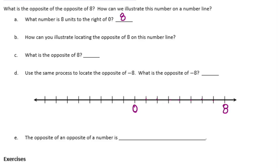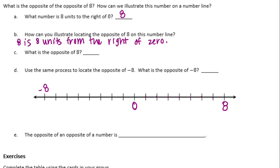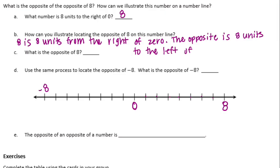How can you illustrate locating the opposite of 8 on the number line? So if that's 8, the opposite of it would be negative 8. We count how far it is from 0 and then find that in the opposite direction. So 8 is 8 units to the right of 0, and the opposite is 8 units to the left of 0. The opposite of 8 is negative 8.